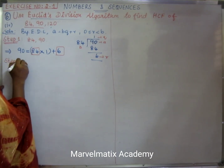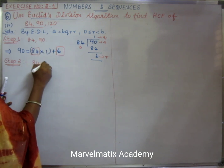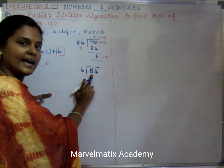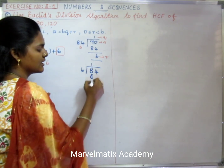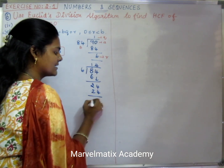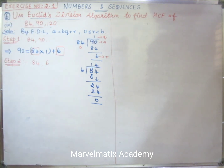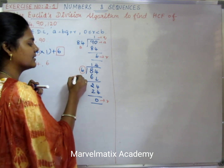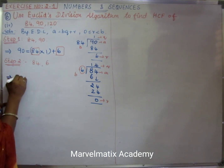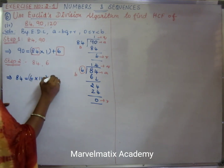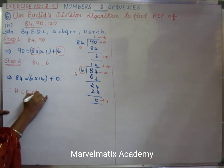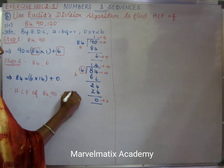Step 2: 84 equals 6 times 14 plus 0. Therefore HCF of 84 and 90 is 6.